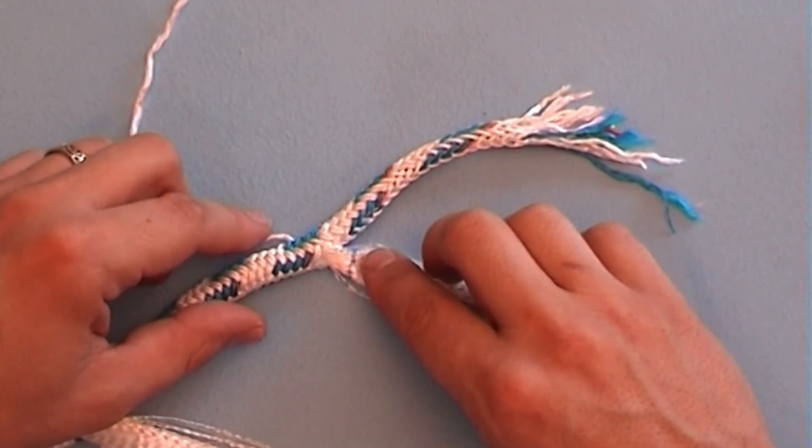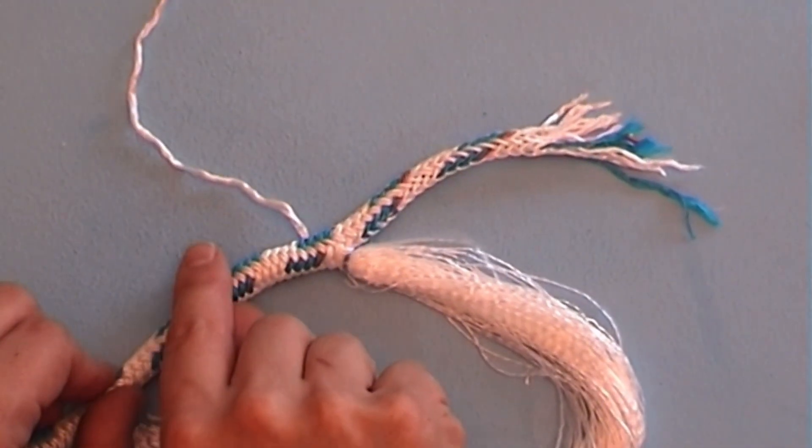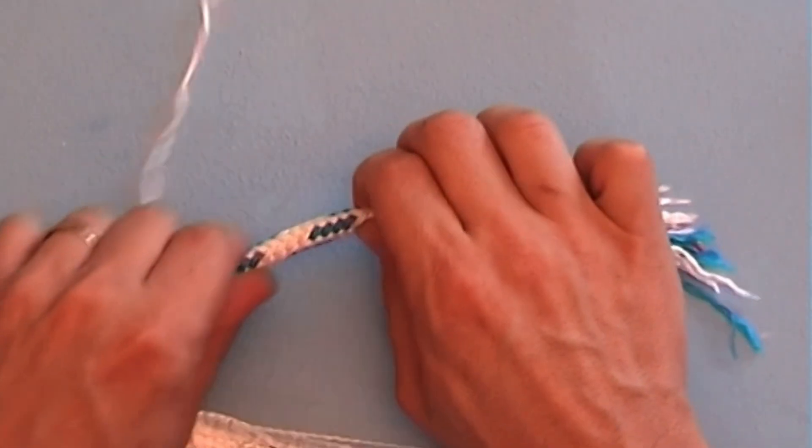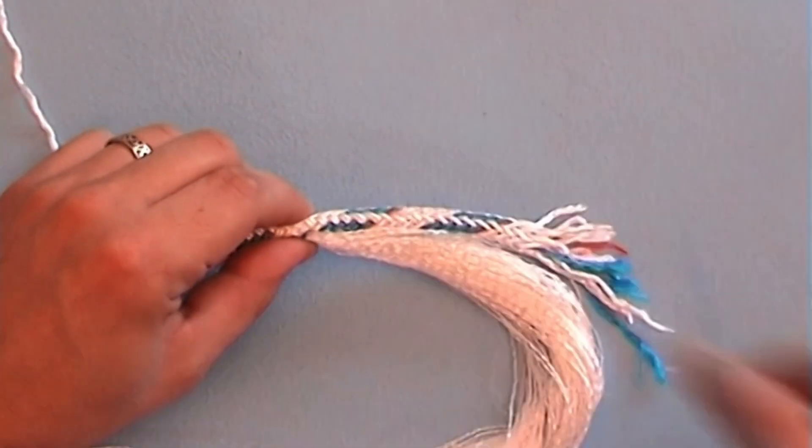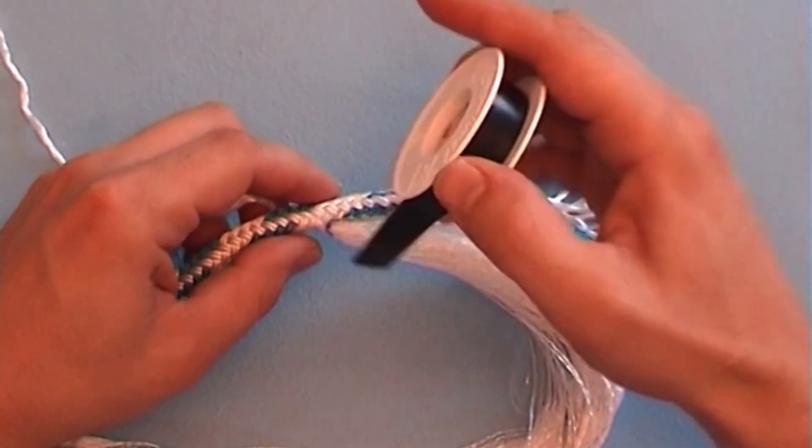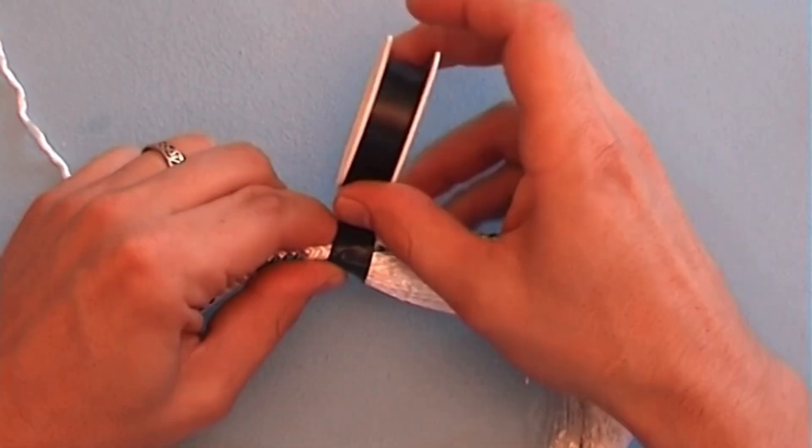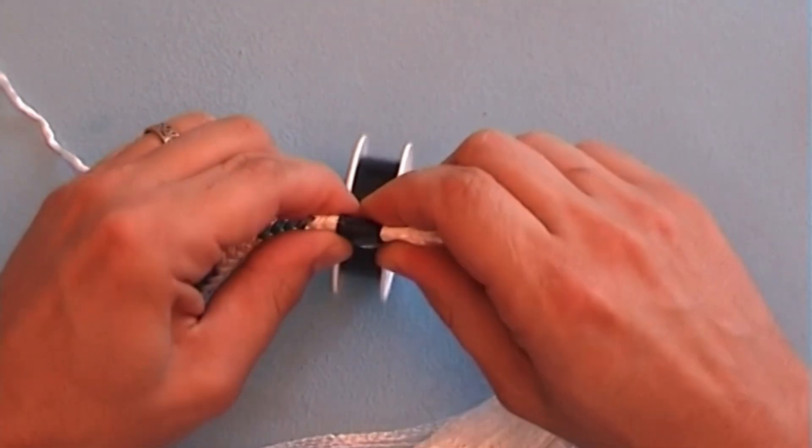Pull at the core end until the marked spot reaches the entry point. Now we need to tape the cover tail over its entire length to the core. Wrap it as tightly as possible using a smooth, elastic adhesive tape.